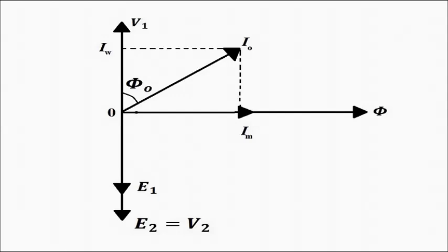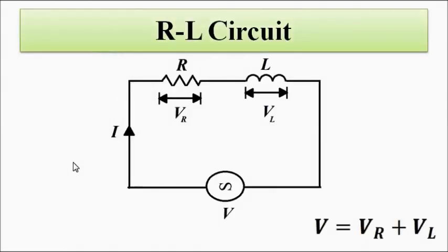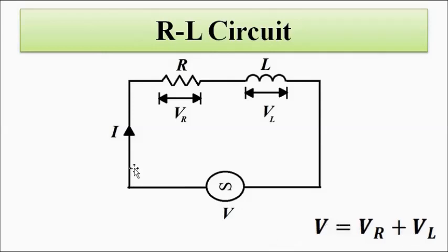Before discussing the phasor diagram for the practical transformer, let us review the phasor diagram for a basic RL circuit. We have a resistor and an inductor, with voltage drops VR across the resistor and VL across the inductor, and a circuit current I with alternating voltage V. By KVL: V = VR + VL. First, we draw the phasor for VR and I, then for VL and I, and then combine them.